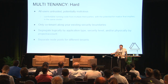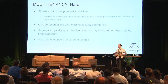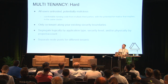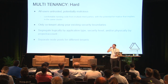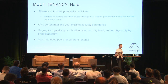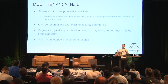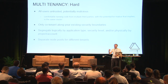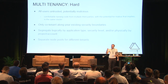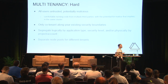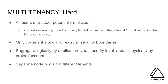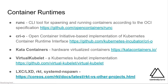Segregate logically by application type and physically where possible. Separate node pools for different tenants. Despite the levels of security we can add to all these things, it really is important to base everything on defense in depth — assume that we're running untrusted, malicious workloads and play through the thought experiment of what happens when a container breakout occurs. It's pretty rare, but all hypervisors and most current container runtime interface runtimes have been broken out of.